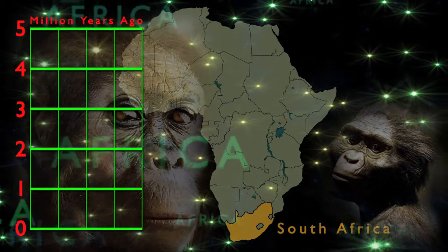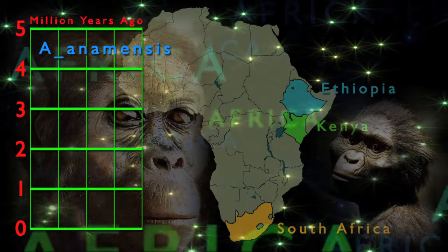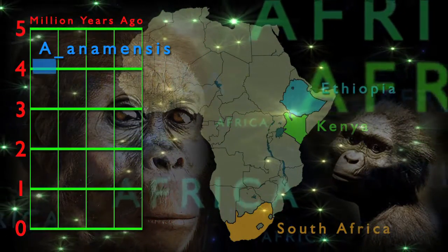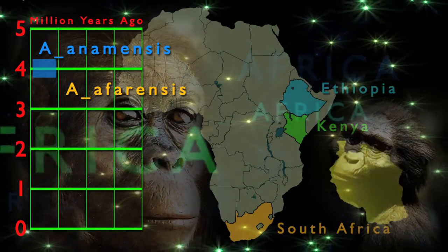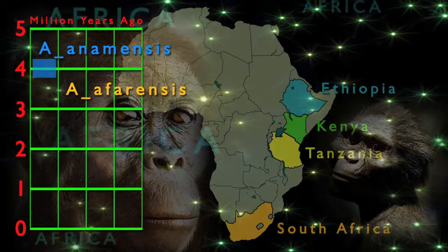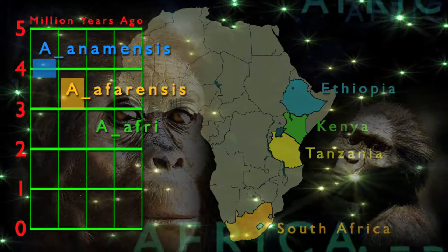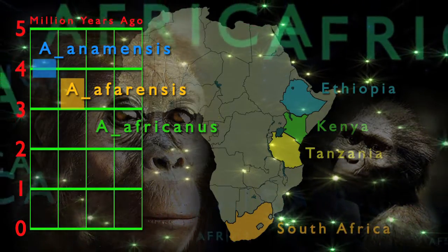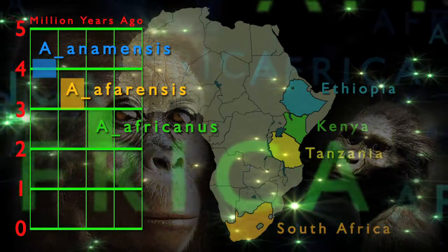We have looked at Australopithecus anamensis in Ethiopia and Kenya — anamensis lived from about 4.2 to 3.8 million years ago. We looked at Australopithecus afarensis in Ethiopia, Kenya, and Tanzania — afarensis lived from about 3.8 to 3 million years ago. The species Australopithecus africanus has only been found in South Africa and lived from about 3 to 2 million years ago.